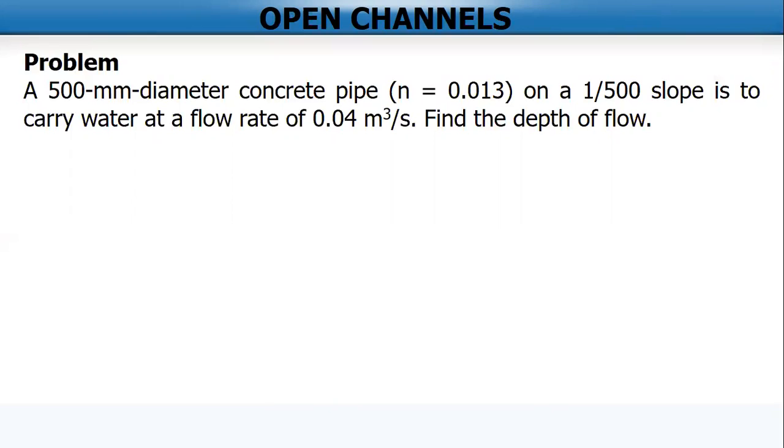So for open channels similar problem given flow rate, first you have to check first what is the possible depth of flow, either above the center or below the center. To do that, let us first assume that the pipe is flowing half full. And then from the value you get, compare it to 0.04.